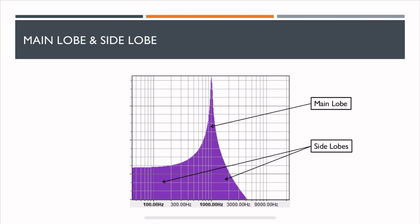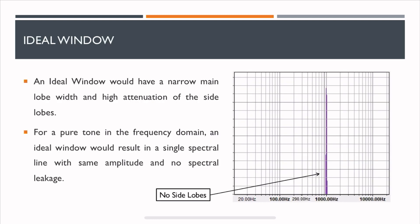Ideally, we want the main lobe to be as thin as possible and to have no side lobes at all. If you look at the ideal window, it has a narrow main lobe and high attenuation of the side lobes.